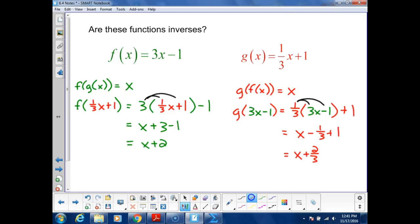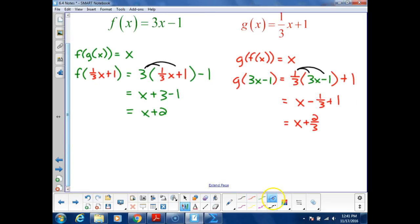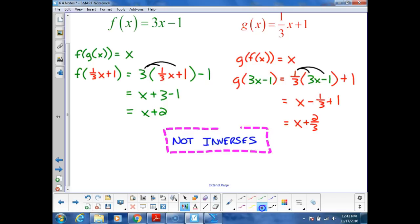If one doesn't work, try it the other way. If they both don't work, not inverses. Negative 1 third plus 1 is 2 thirds. Negative 1 third plus 3 thirds. 3 thirds is like 1. So negative 1 plus 3 is 2. 2 thirds.